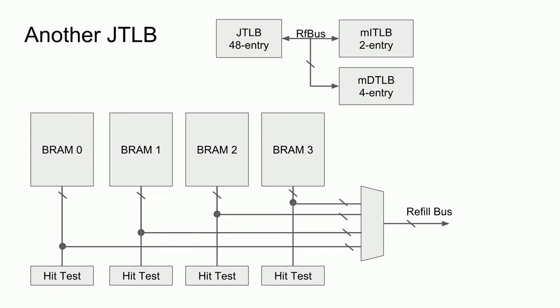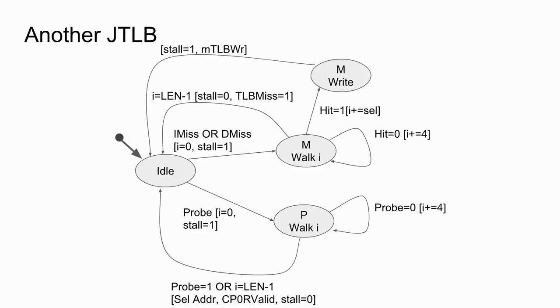The only issue is the added complexity of a probe and refill state machine. Since entries are stored in four block RAMs, we can only access them four at a time, meaning in the worst case we must walk through the entire TLB file to compare each entry with the value we are looking for. This applies to both micro-TLB misses and TLB probe instructions, requiring a multi-cycle state machine and a counter to track the current multiple of four being examined. Here is the state machine I came up with.